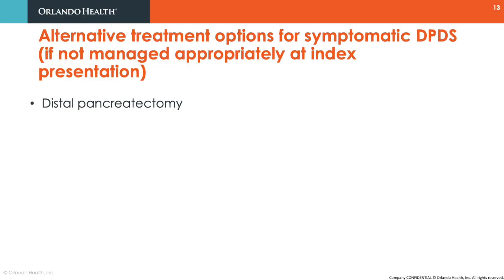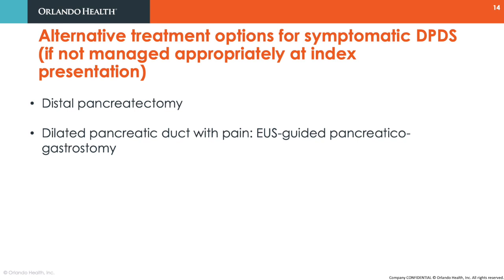If a thoughtful approach is not undertaken at index intervention, then DPDS can manifest later as pain, pancreatitis, or recurrent fluid collection. While distal pancreatectomy is the definitive treatment, most patients are poor surgical candidates. In patients with pain and a dilated main pancreatic duct, an EOS-guided pancreatic gastrostomy can be undertaken.